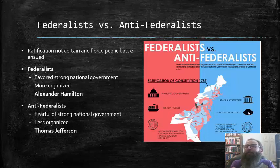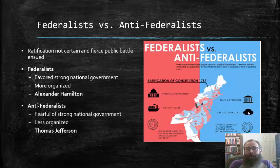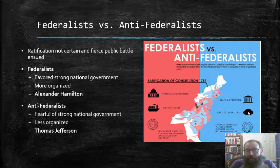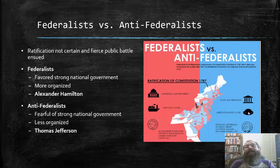Neither one of these camps were political parties per se, as we understand them quite yet, but the kernels of that development were there in this debate over the ratification of the Constitution. The Federalists were those like Madison and Hamilton who favored strong national government. They were pro-Constitution, and they were very much more organized than their opposition, led fiercely by Alexander Hamilton, who was very vocal in his support for ratification.